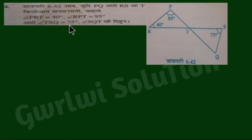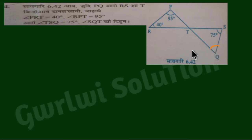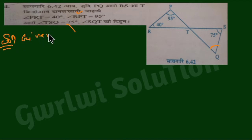The next question involves triangle TSQ. Given: angle TSQ is 75 degrees, angle RQT is 95 degrees, and angle PRT is 40 degrees. We need to find angle SQT. Let's take a look at this problem. We are given angle PRT equals 40 degrees.